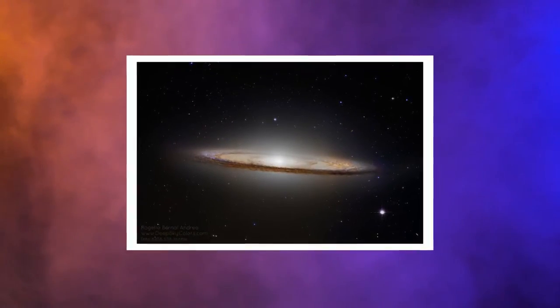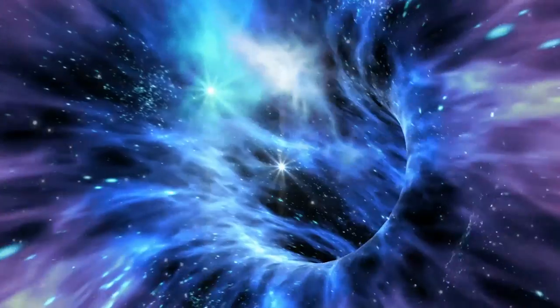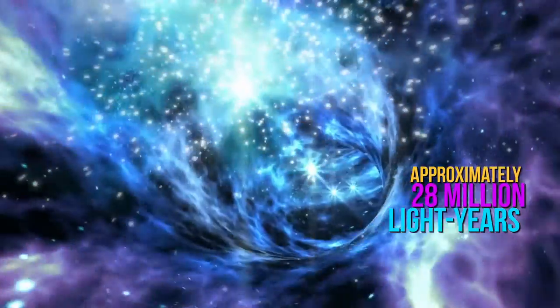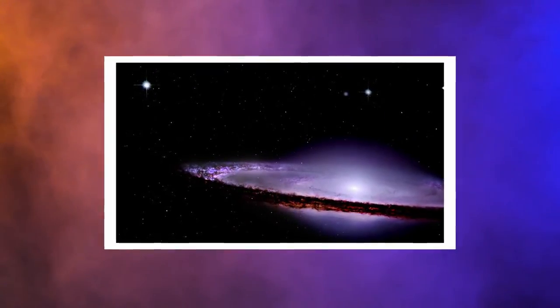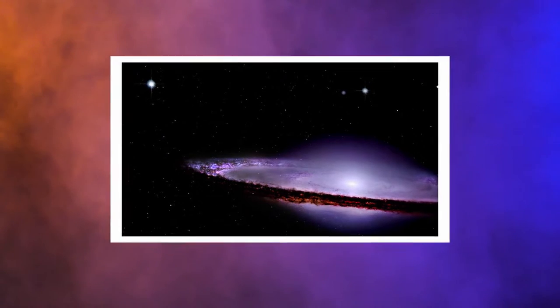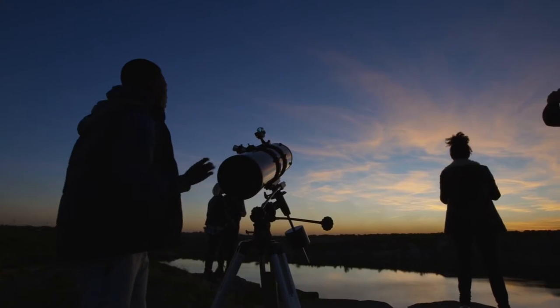M104 is located in the constellation Virgo and approximately 28 million light-years away from us. The Sombrero Galaxy appears to have a magnitude of plus 9.0. As a result, it's easily seen with an amateur telescope.